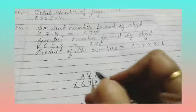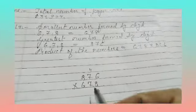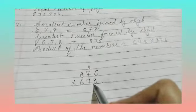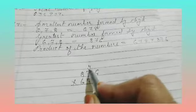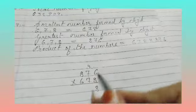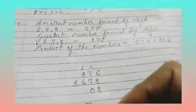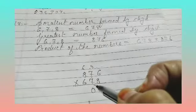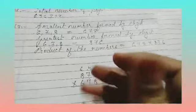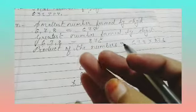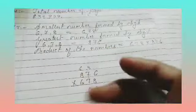8 times 7 is 56, 57, 58, 59, 60. Write 0, carry 6. 8 times 8 is 64, 65, 66, 67, 68, 69, 70.